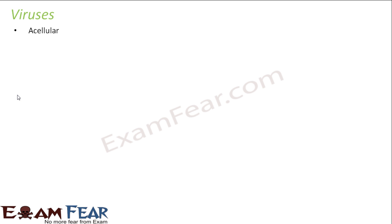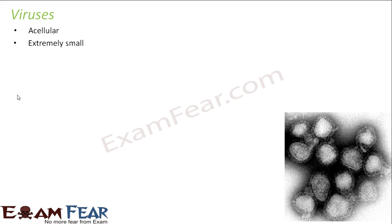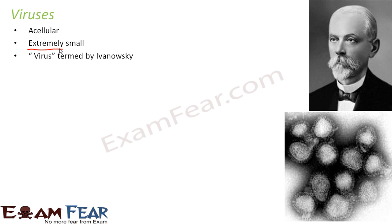Now let us talk about the characteristics of viruses. They are acellular - organisms without a cell. Just as unicellular means one cell and multicellular means many cells, acellular means without cells. They are extremely small - even smaller than bacteria, which have always been considered the smallest living organisms. The name virus was given by the scientist Iwanowski. He called it virus because the word virus means a poison or poisonous substance.